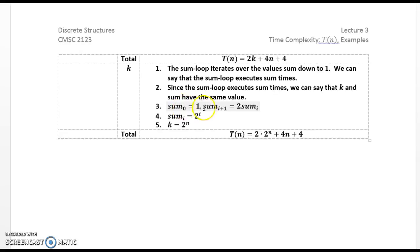The sum loop iterates over the values of the sum down to 1. We can say that the sum loop executes sometimes. Since the sum loop executes sometimes, we can say that k and sum have the same value. Sum sub 0 is equal to 1, and sum sub i plus 1 is equal to 2 times sum. Therefore, what we can find out is, by using the mechanisms of our last module, that sum sub i is equal 2 to the i, and k is equal 2 to the n. Therefore, t of n is equal to 2 times 2 to the n plus 4n plus 4. Thank you.